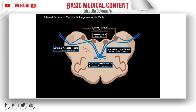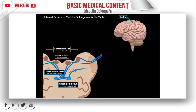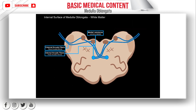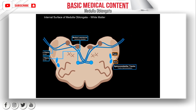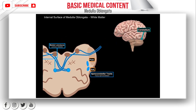Once the internal arcuate fibers cross, they ascend upwards as the medial lemniscus, going further through the diencephalon and then to the primary somatosensory area in the cerebral cortex. Next, we have two tracts on either side called the spinocerebellar tracts — the anterior spinocerebellar tract and the posterior spinocerebellar tract. If the tracts end with the word cerebellum, they will ascend to the cerebellum.